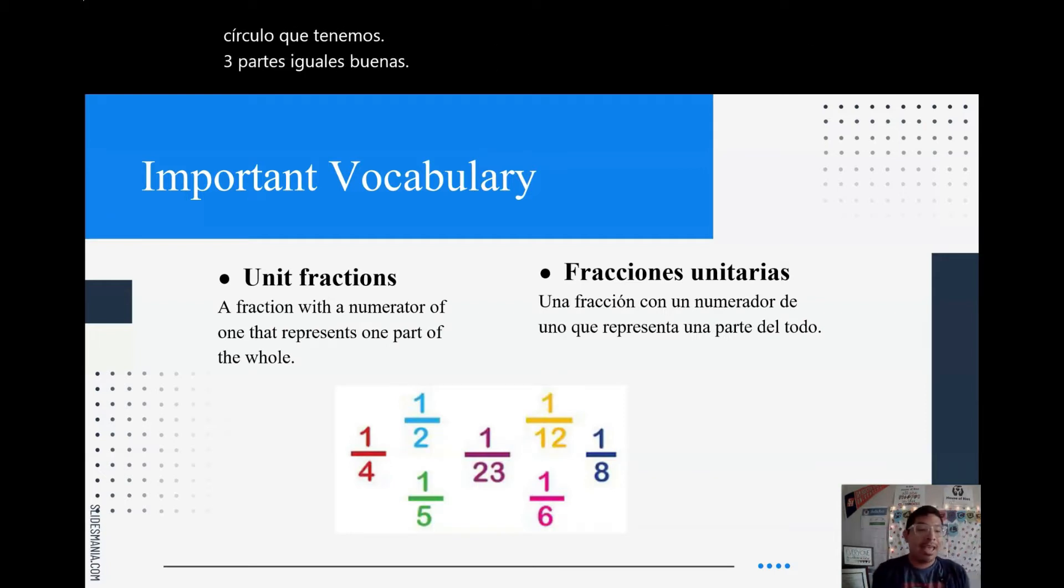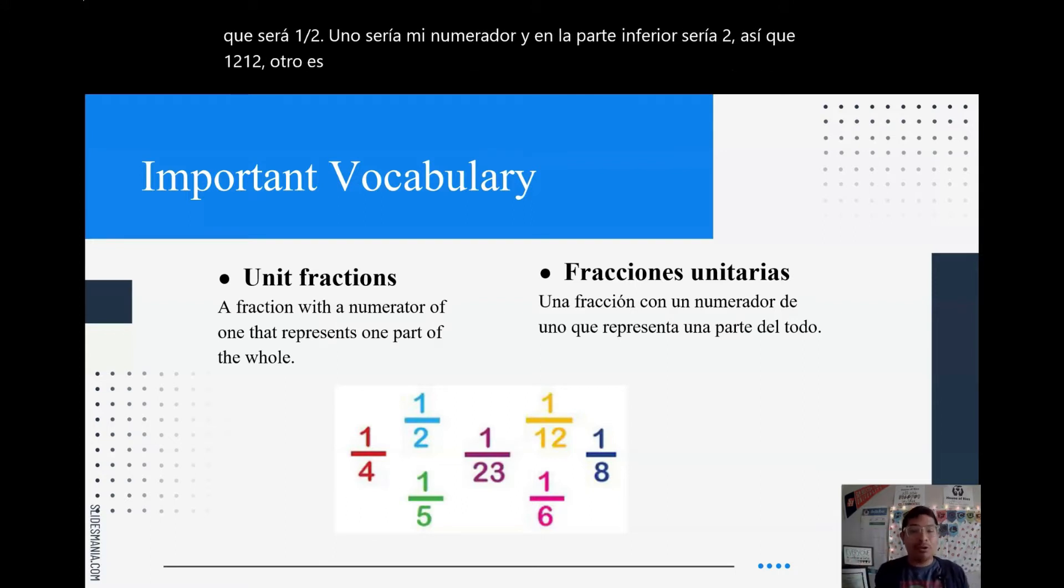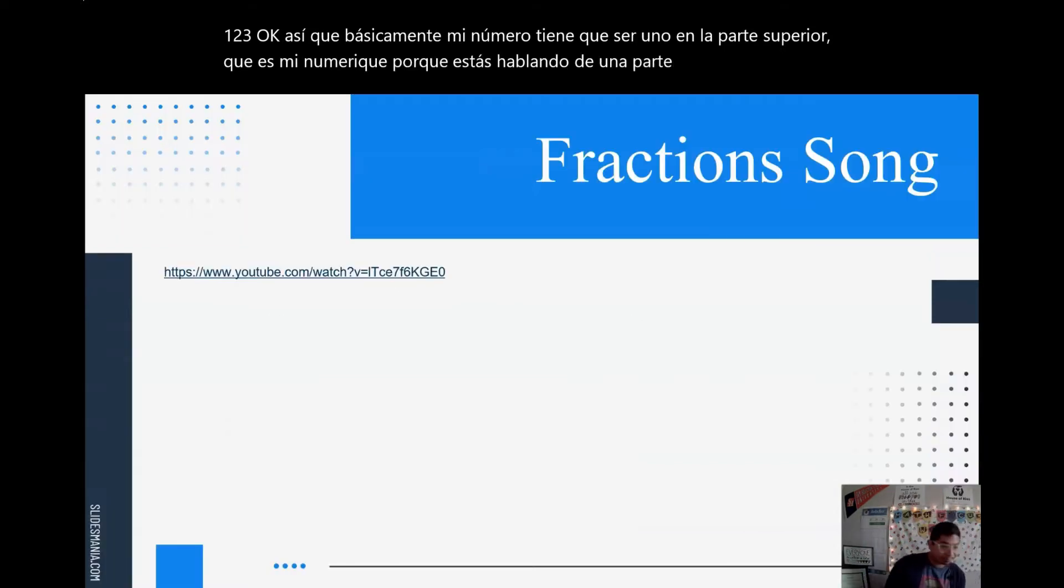Unit fractions. A fraction with a numerator of one that represents one part of the whole. So for an example, if I have four equal parts, a unit fraction of this four would be just one-fourth. Look over here, we have one-fourth. That's a unit fraction. If I have a circle divided into two equal parts, a unit fraction of that would be one-half. One would be my numerator, and on the bottom would be two. Another one is if I have 23 equal parts, a unit fraction of that would be one out of 23. So basically, my numerator has to be a one on the top, which is my numerator, because we're just talking about one part of that whole.